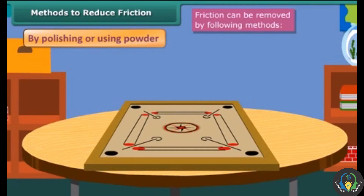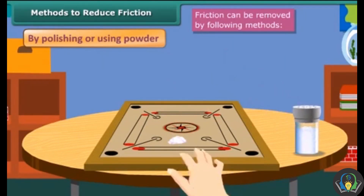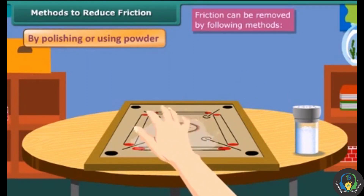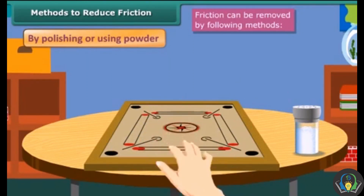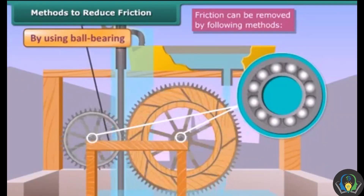Friction can be reduced by the following methods. By polishing or using powder: we can smooth the rough surface by polishing or by using powder, and due to the smoothness, friction is reduced from the surfaces.